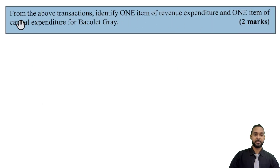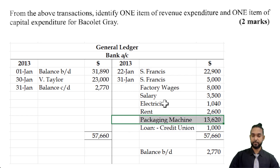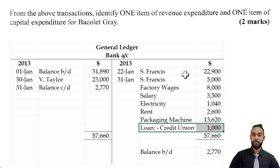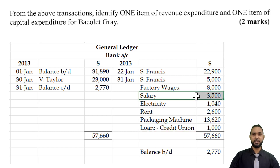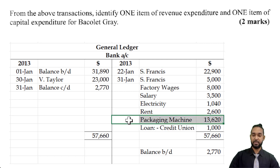Part 8 asks us to identify one item of revenue expenditure and one item of capital expenditure for Barclay Gray. Capital expenditure is any expenditure to acquire or make significant improvements to non-current assets — we only had one: the packaging machine. Everything else was revenue expenditure. Revenue expenditure is any expenditure that is not capital expenditure — practically any expense in your income statement: electricity, rent, factory wages, paying off creditors. These are all items of revenue expenditure.